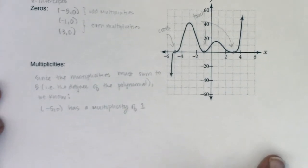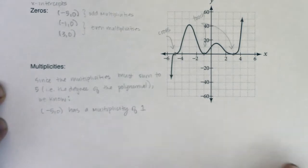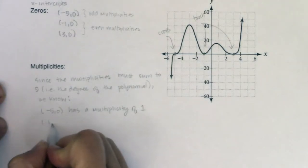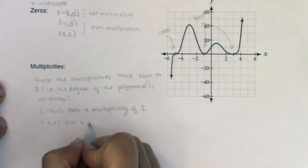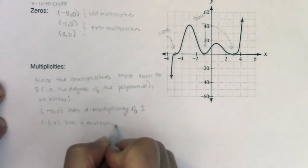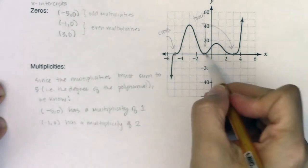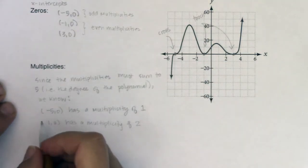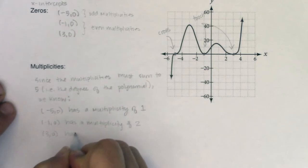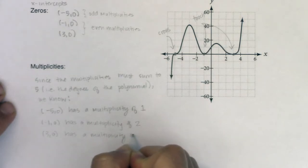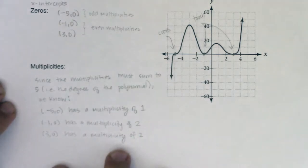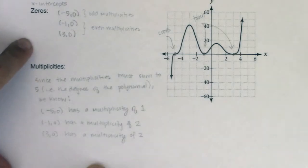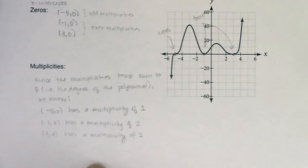We also know that negative 1, 0 has a multiplicity of 2. And it has to have an even power on that factor because it touches the x-axis. And by that same rationale, 3, 0 also has a multiplicity of 2. So I've answered the question asked of me. I found the zeros and I found their respective multiplicities.